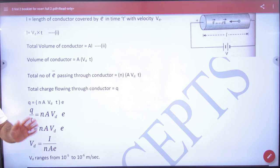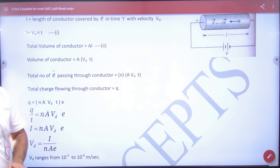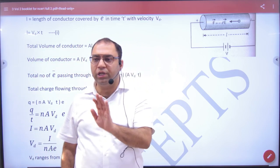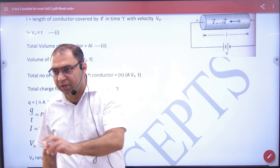The velocity of drift of electrons ranges from 10 power minus 5 to 10 power minus 6 meter per second approximately. Very slow velocity, very small velocity.